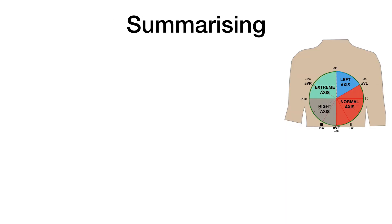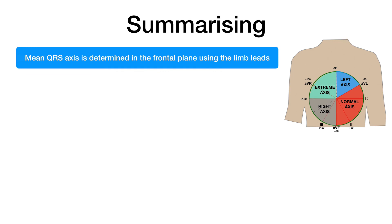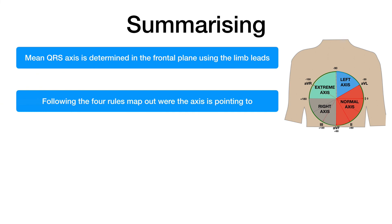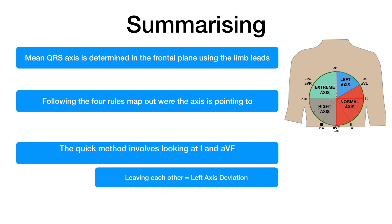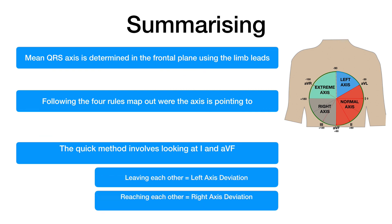So summarizing: the mean QRS axis is determined in the frontal plane using the limb leads. Following the 4 rules, we can map out where the axis is pointing. The quick method involves looking at leads 1 and AVF — leaving each other equals left axis deviation, reaching each other equals right axis deviation.